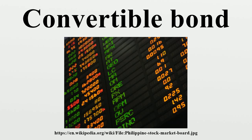The first conversion price would limit the price where the investor would receive the equivalent of its par value back in shares. The second would delimit where the investor will earn more than par. Note that if the stock price is below the first conversion price, the investor would suffer a capital loss compared to its original investment.